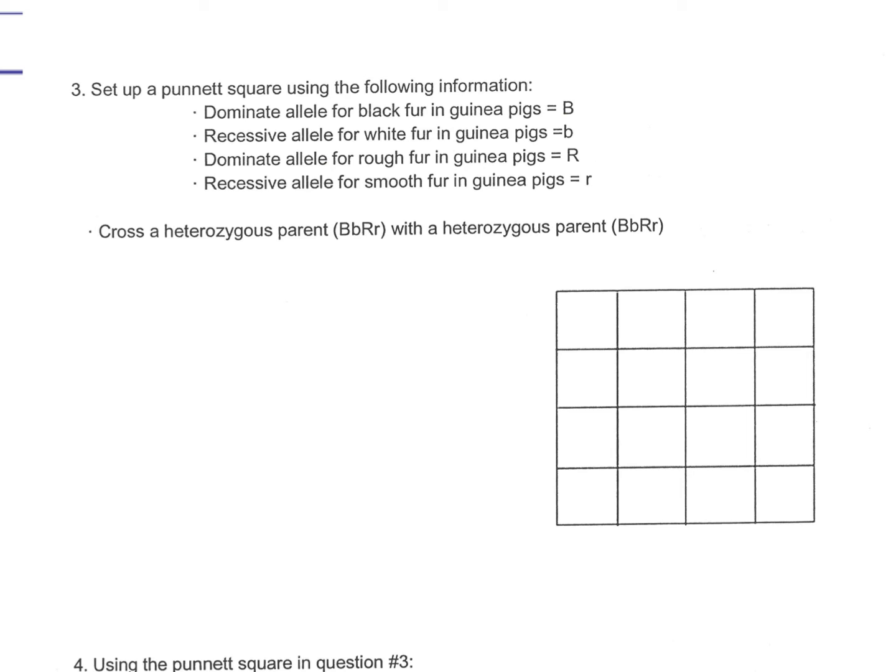So what you're going to do now is continue on to question three. You've got more information here. Black fur is dominant, white fur is recessive, and rough fur is dominant, and smooth fur is recessive. So it's just identifying the dominance. Now, what you're going to do is you can make a Punnett Square on your laptop like this, a 4x4 table, and just label your document correctly.